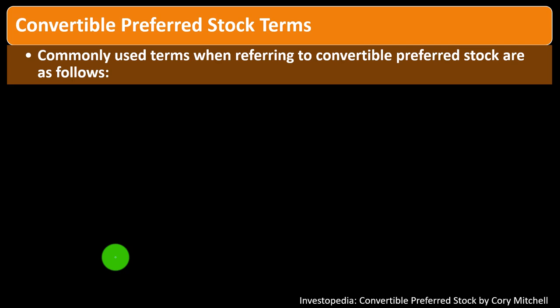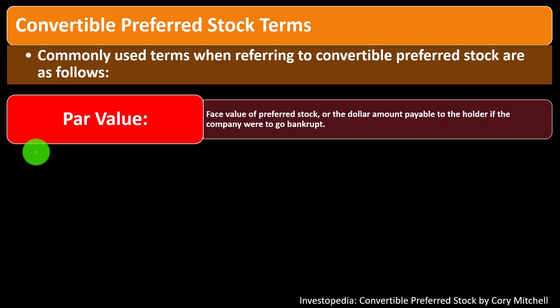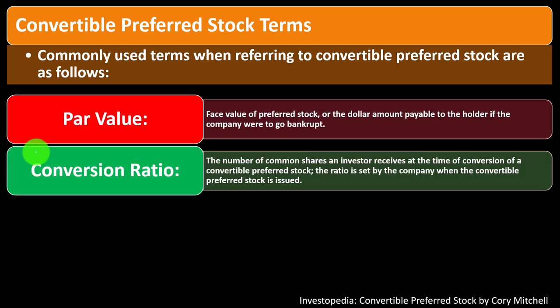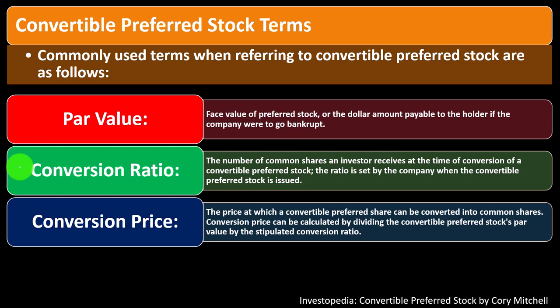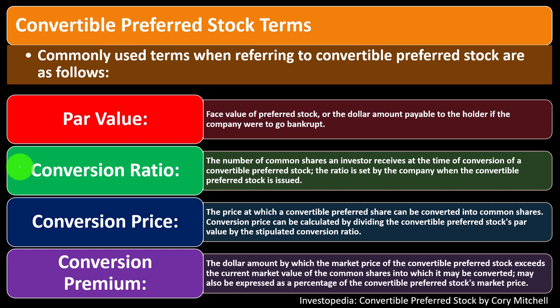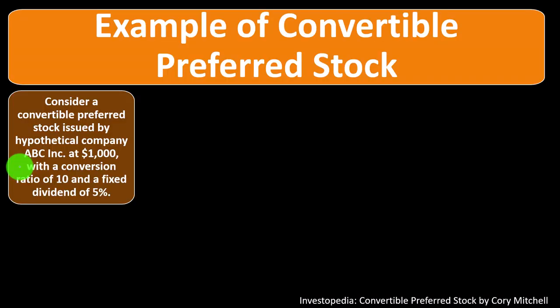Commonly used terms when referring to convertible preferred stock: Par Value — the face value of the preferred stock, or the dollar amount payable to the holder if the company goes bankrupt. Conversion Ratio — the number of common shares an investor receives at conversion; set by the company when the convertible preferred stock is issued. Conversion Price — the price at which a convertible preferred share can be converted into common shares, calculated by dividing the par value by the conversion ratio. Conversion Premium — the dollar amount by which the market price of the convertible preferred stock exceeds the current market value of the common shares into which it may be converted, sometimes expressed as a percentage.